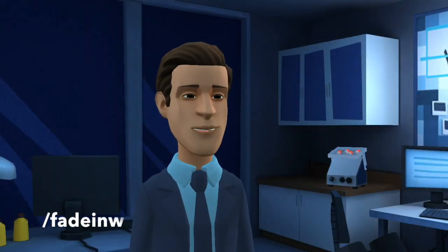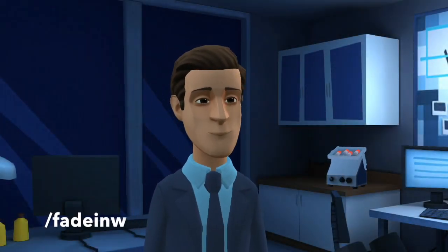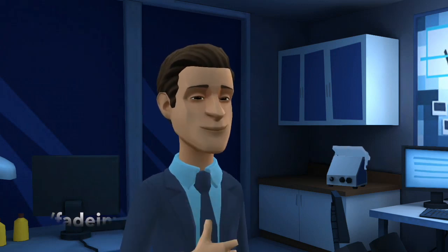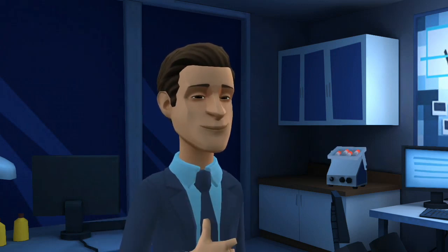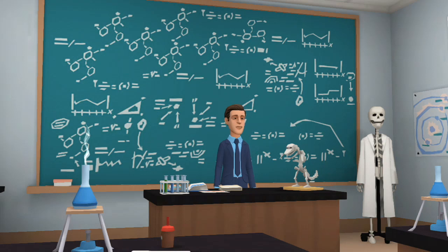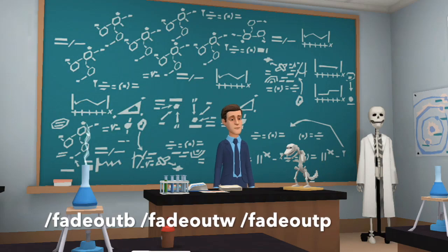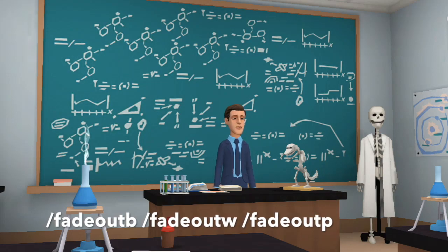You can also type backslash fade in W to fade in from white. Or, to get really fancy, type backslash fade in P to fade in from pixels. If you want to fade out, just type backslash fade out B, W, or P.